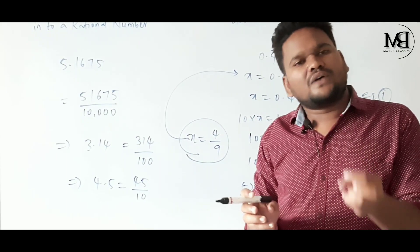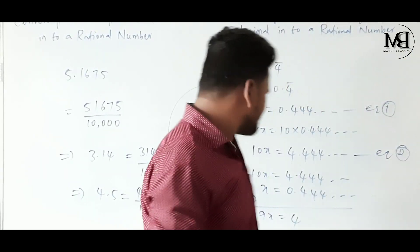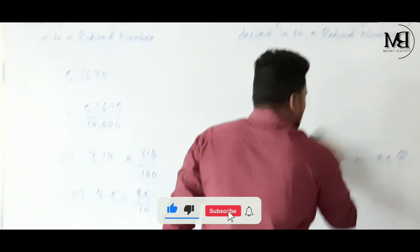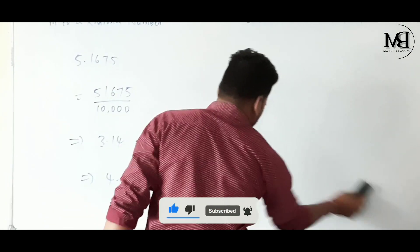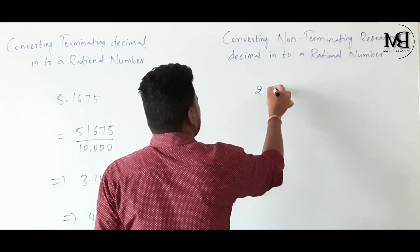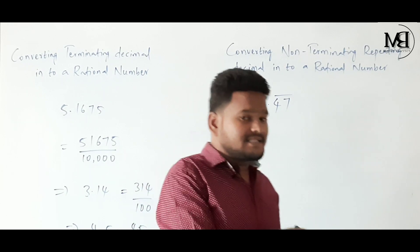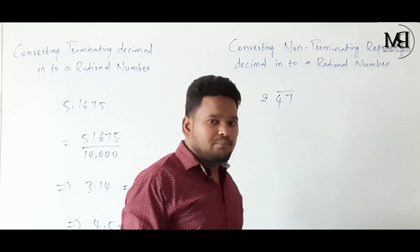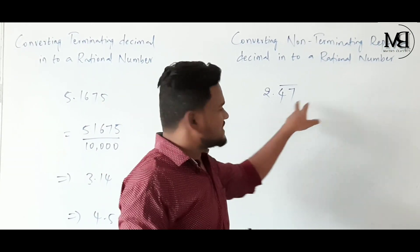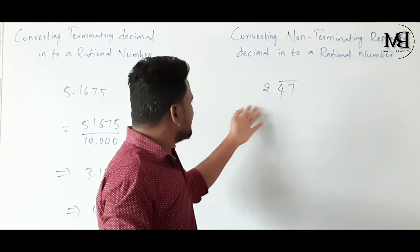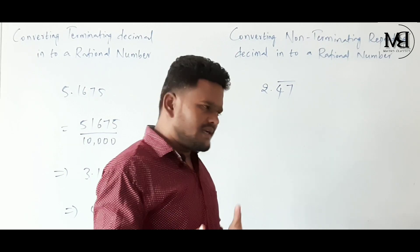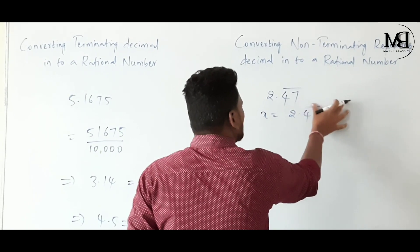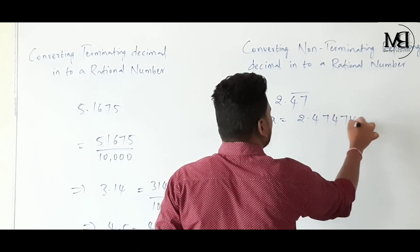To make it easy, just follow those three points. Let's see one more example: 2.47 bar. In the first example only one digit repeated; here two digits — 47 — are going to be repeated. Let us consider it as X. X = 2.47̄ means 2.474747 and so on.